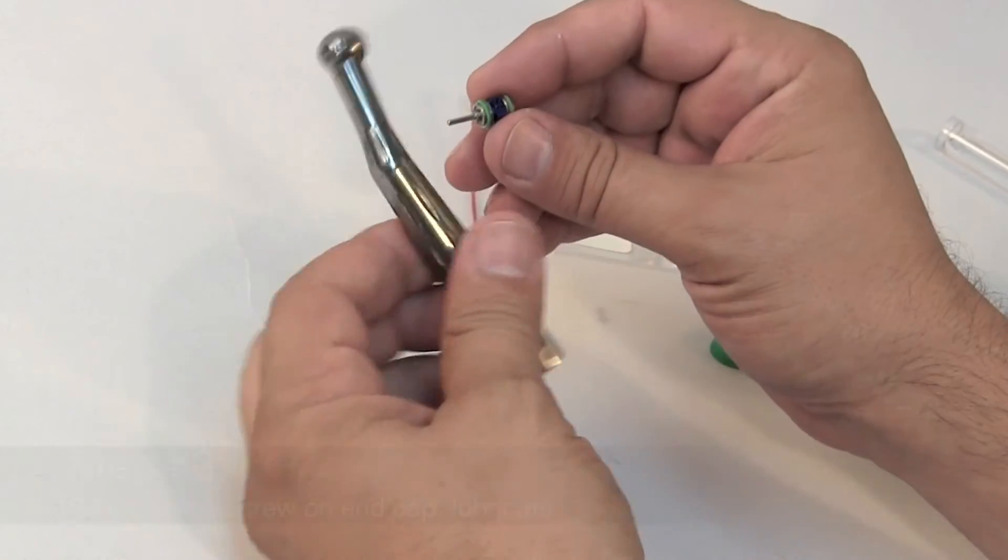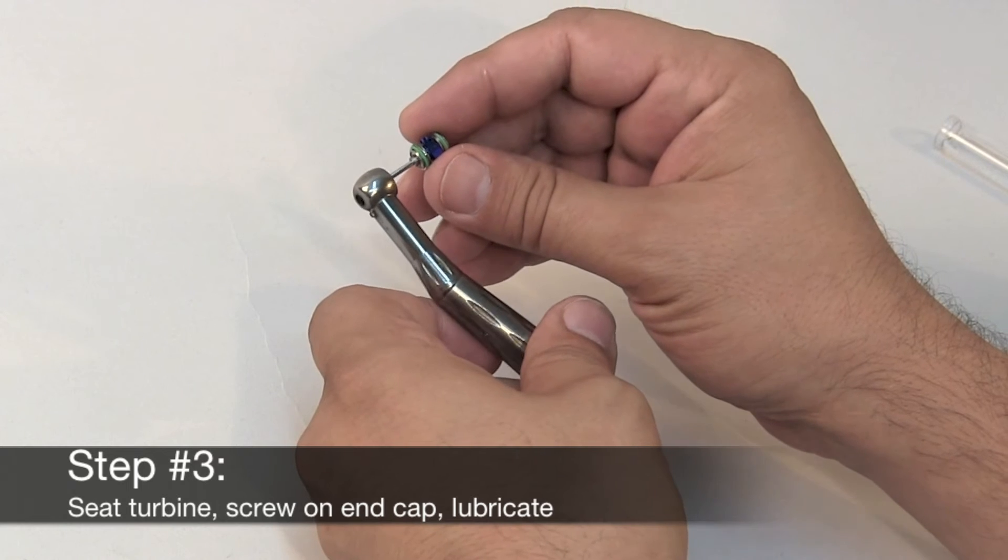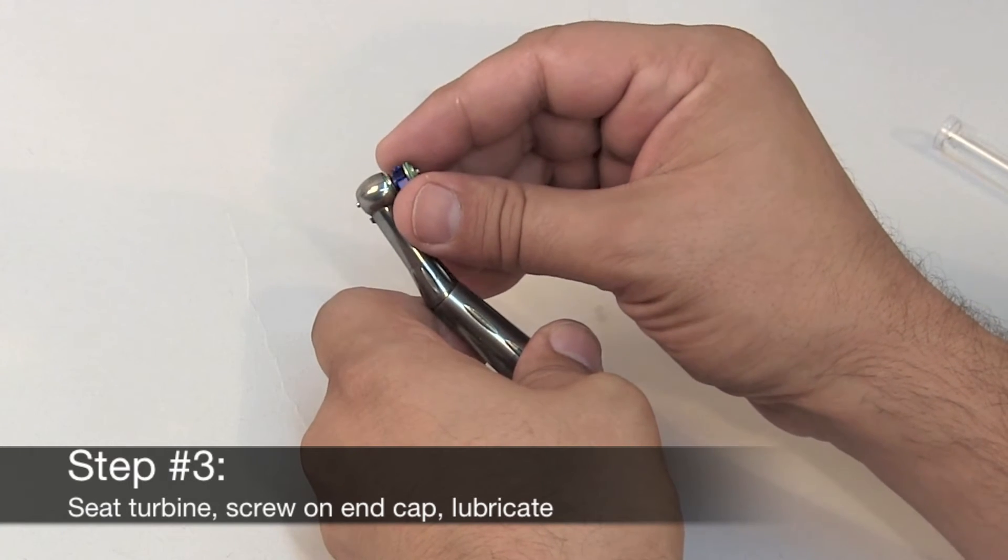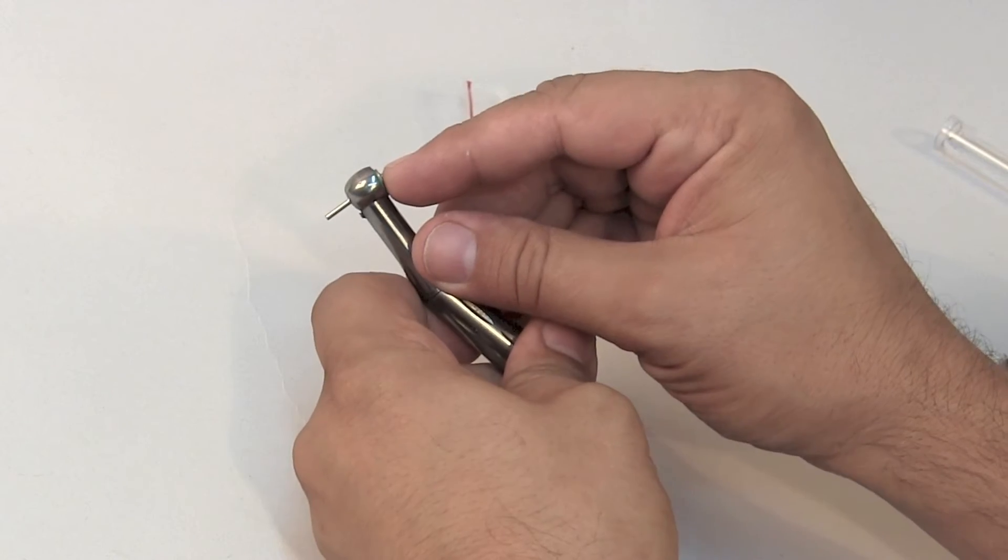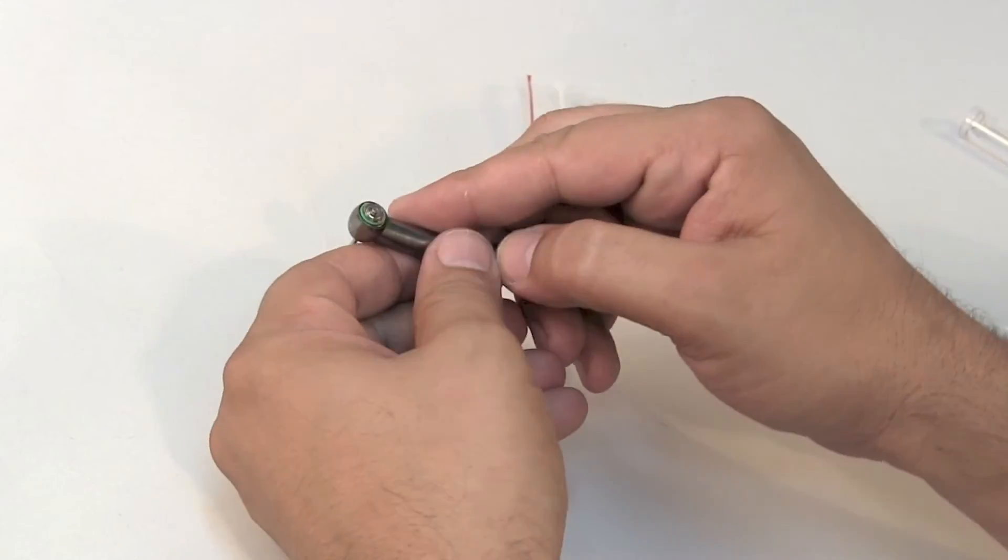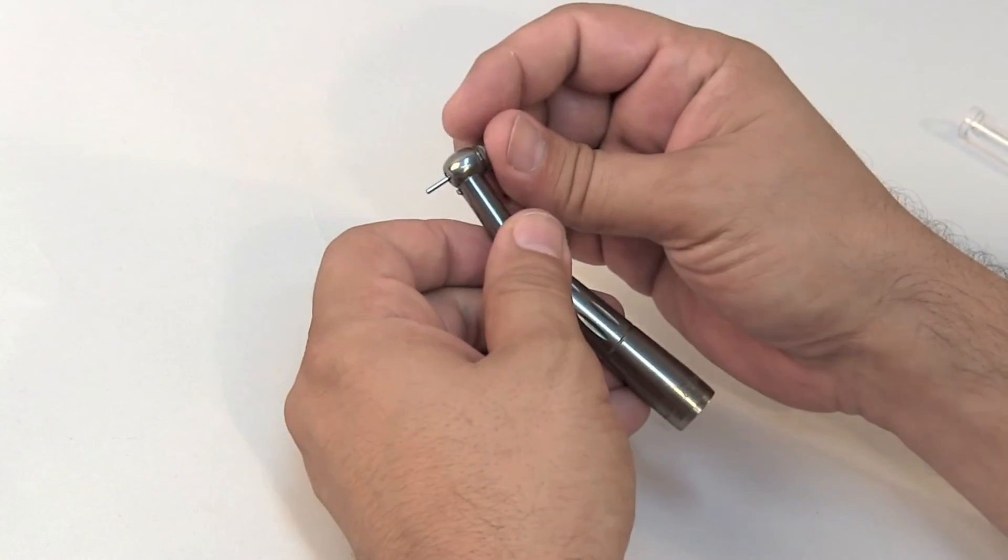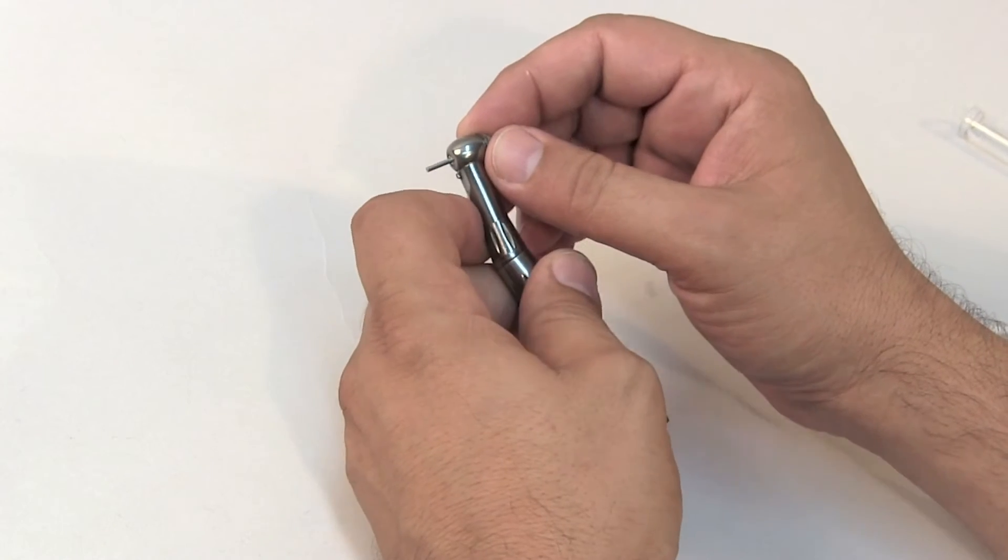Now it's time to install your turbine. Insert the turbine fully into the handpiece head. Use your end cap wrench to screw the end cap down until flush against the handpiece head.